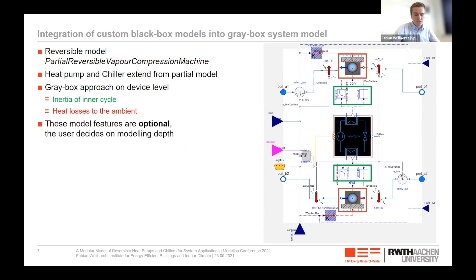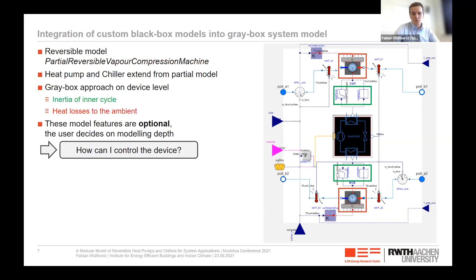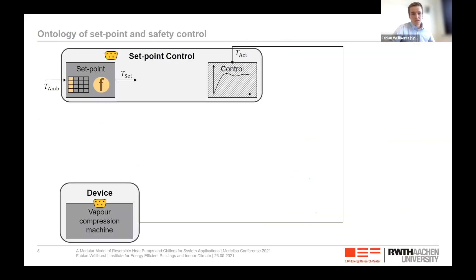Now I want to go into further detail on how we control the device — the control in the energy system is very important. Normally for heat pumps and chillers, we apply some kind of set point control. For a heat pump, for example, we use a heating curve based on outdoor air temperature to calculate the set point temperature. Before feeding this set point into the actual controller — for example, a PID controller — to match the actual device temperature to the set point, we must consider safety controls.